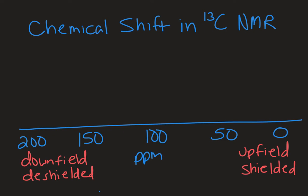Welcome to Chemistry with Caroline. In this video we're going to take a look at chemical shift in carbon-13 NMR. Chemical shift is where a signal shows up on your NMR spectrum. For carbon-13 NMR, the chemical shift range is quite a bit larger than proton NMR—0 to 200 ppm instead of 0 to 12.